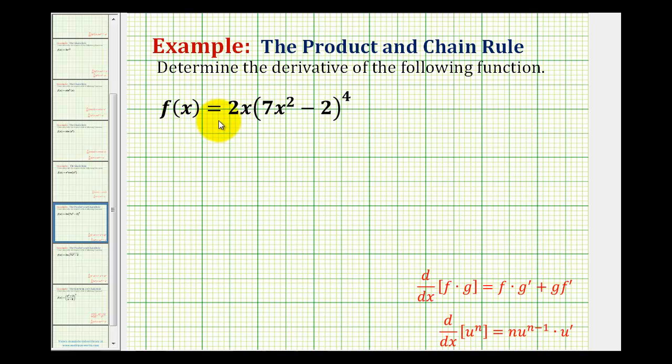We want to determine the derivative of f of x equals 2x times the quantity 7x squared minus 2 raised to the fourth power. We can't distribute this 2x because this is raised to the fourth power, so we need to recognize that we have a product of two functions.